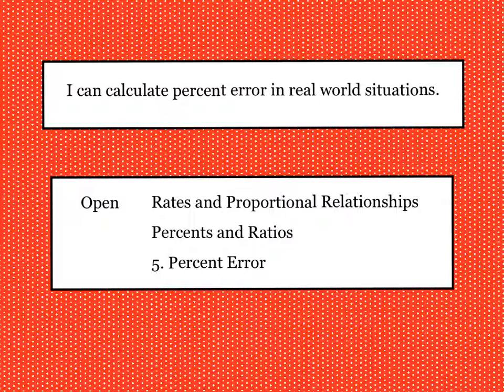Our I can statement today is: I can calculate percent error in real world situations. Percent error is how far off an estimate or initial measurement or guess was. One good example is with the weather. In the morning the weather forecast might say 15 degrees today, but it actually gets up to 20 degrees. We can calculate what percentage the weather prediction was off by and see how close or far off they were from the actual data.